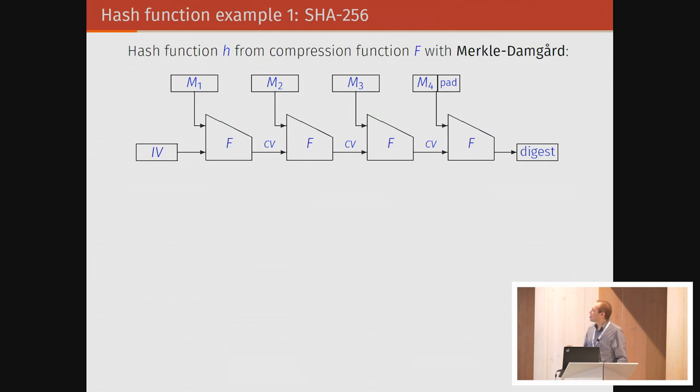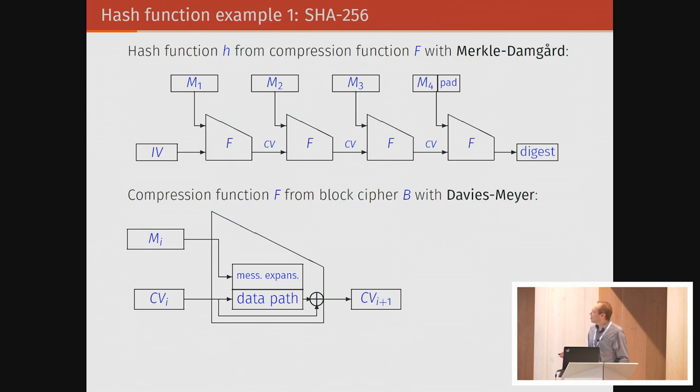Let's start with a number of examples. We start with SHA-256, but SHA-1 would be the same. We build a hash function from a fixed input length compression function by applying the Merkle-Damgard construction, well known to everyone. At this compression function, we build it hierarchically. We have two layers. We build it from something smaller, namely a block cipher, because that's something we know how to build. We don't know how to build a fixed input length compression function, but we know how to build a block cipher. This is basically the Davis-Meyer construction.